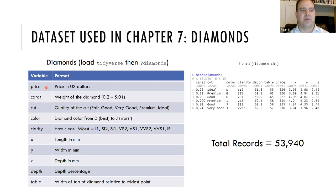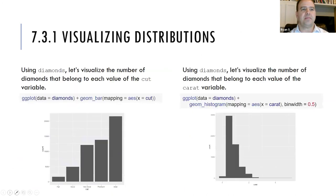We're going to go really quickly through what we've already covered in chapter 7 in order to close it out. We've seen the diamonds dataset and we're familiar with that. We started out looking at how to present a categorical variable of cut when the only thing we wanted to present was the number of observations — one categorical variable with the y-axis being number of observations.